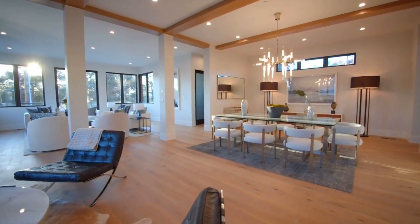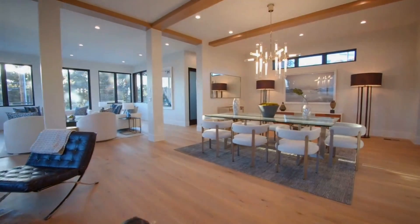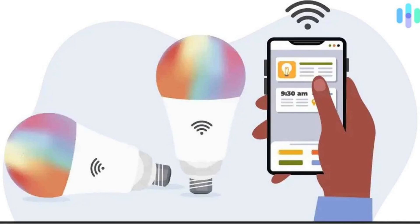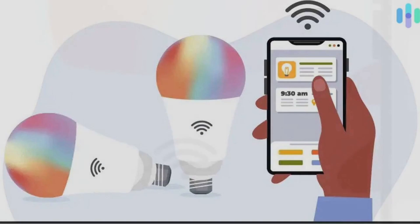To begin grouping your lights in Google Home, you'll need to make sure they are all connected to the app. Here's how to set up your lights: 1. Open the Google Home app on your smartphone or tablet. 2. Select Devices and tap the plus to add a new device. 3. Follow the prompts to connect your lights to the app.